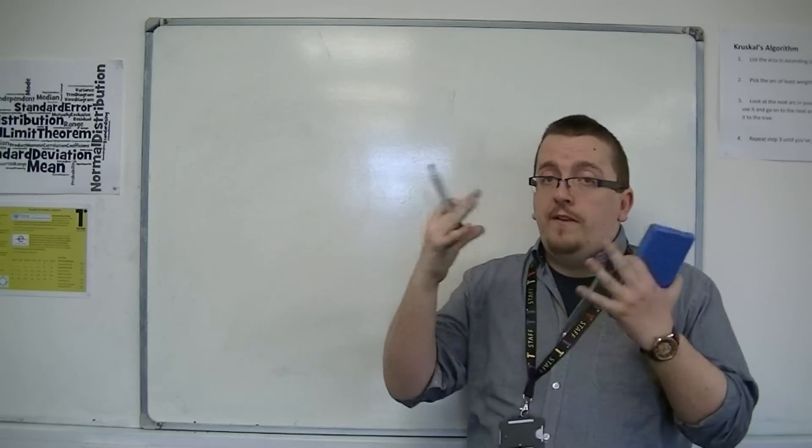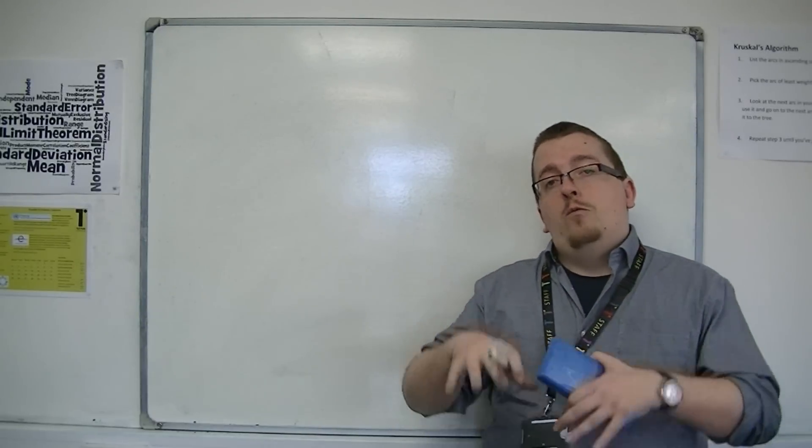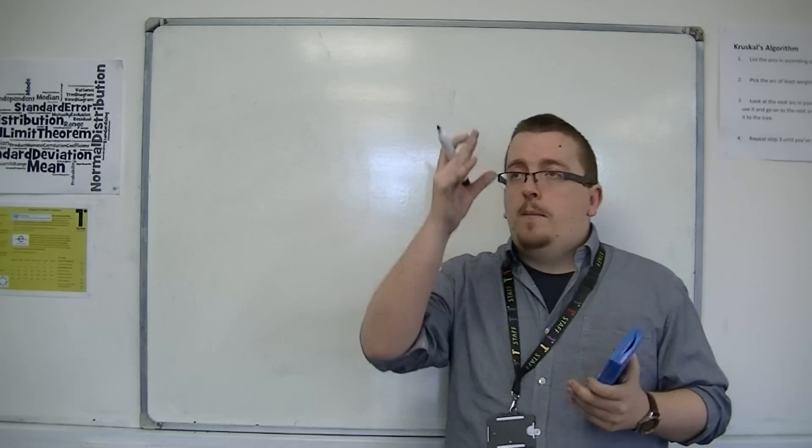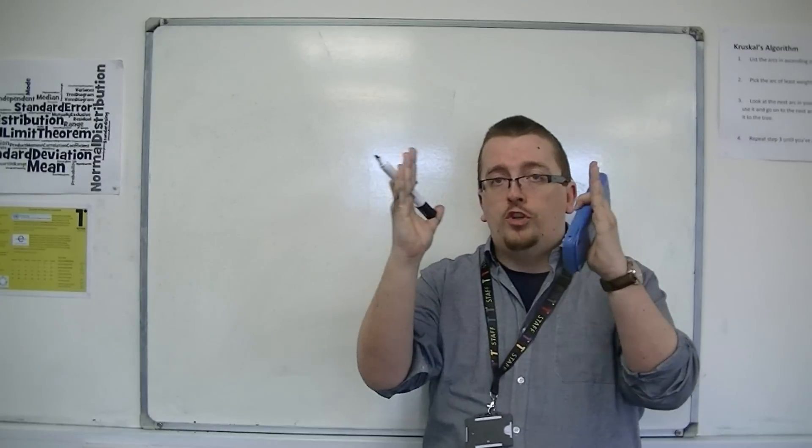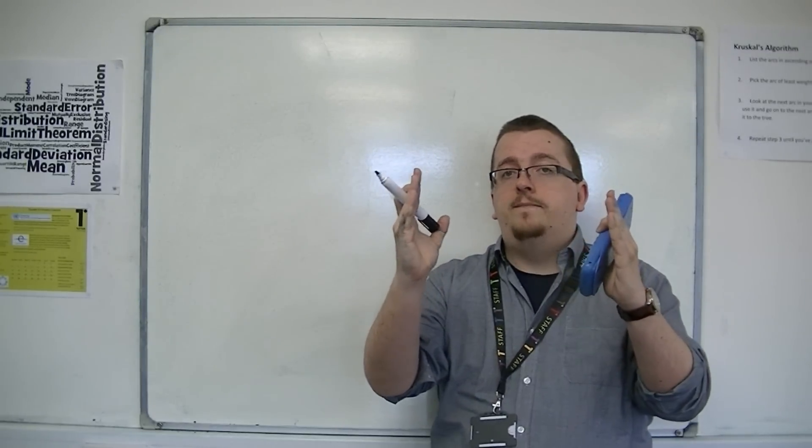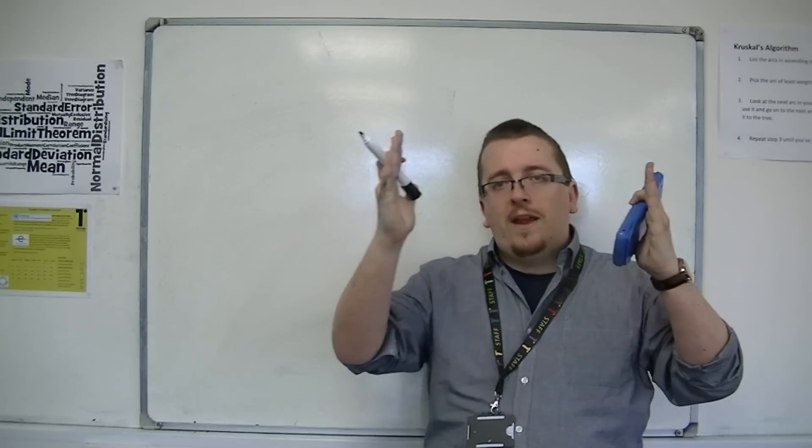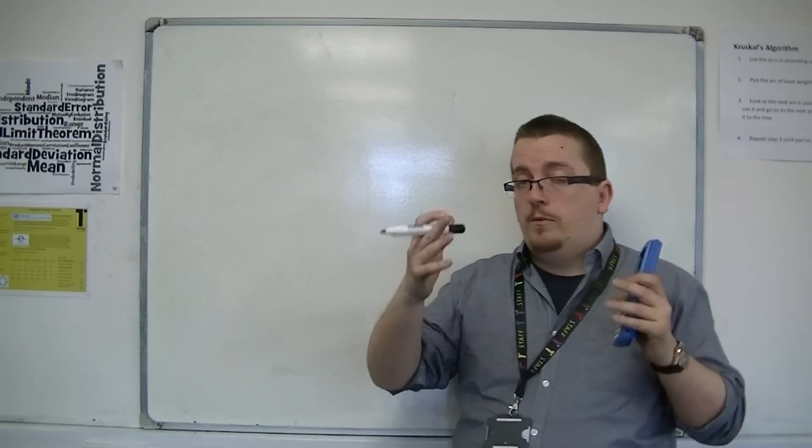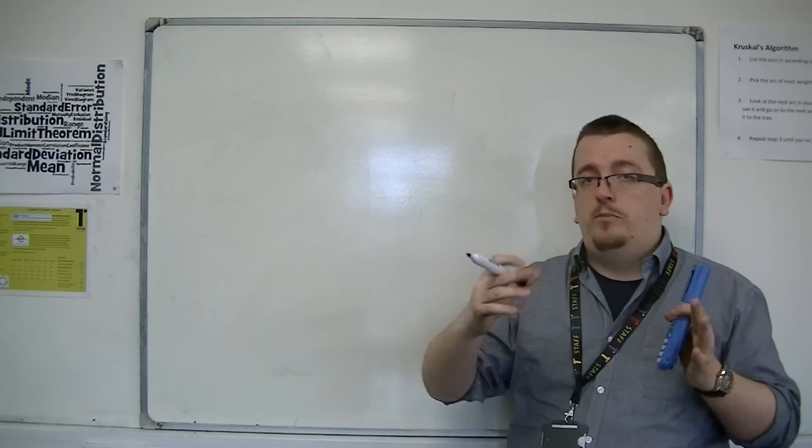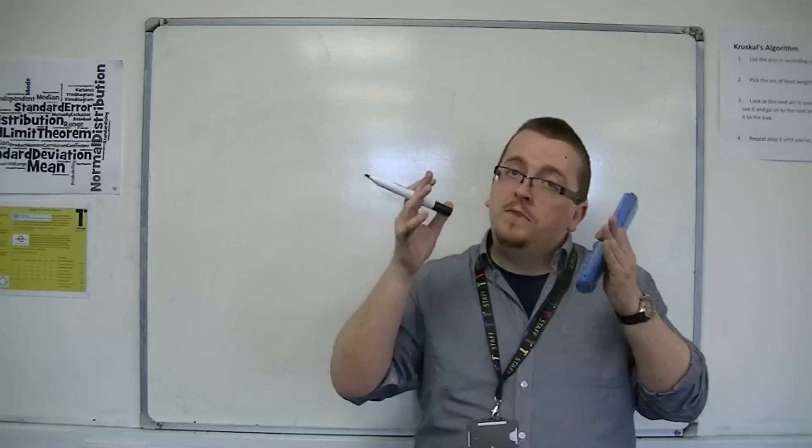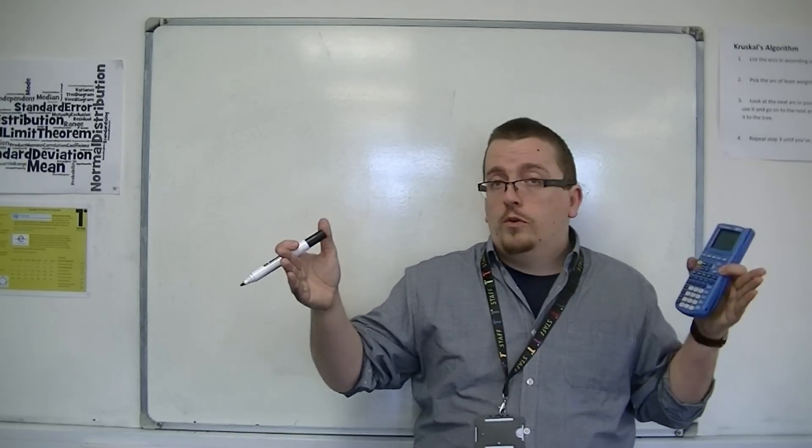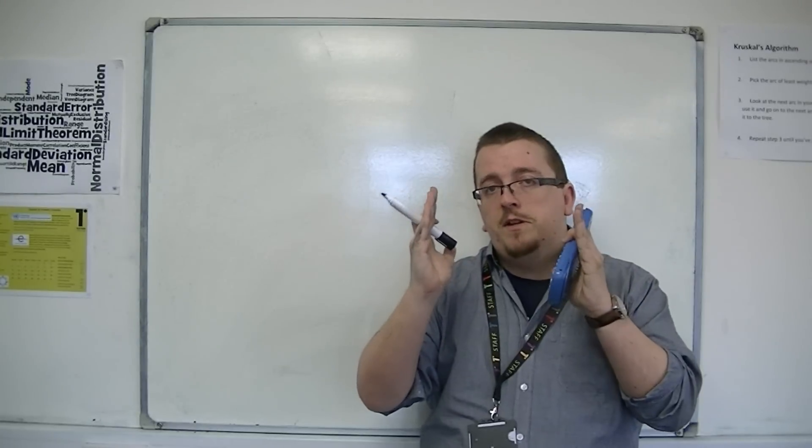So we'd be looking at a very large sample and what we would expect is that there would be about the mean a large proportion either side of the mean. And then as you get further and further away from the mean, there's going to be a few people. So if we go with the height example of the year 7s, there's going to be a few year 7s that are quite tall and a few year 7s that are quite short, but the majority are going to be in the middle.